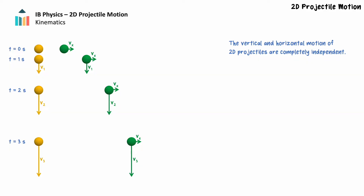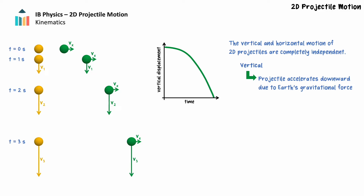Vertically, the projectile accelerates downward due to the Earth's gravitational force. If we examine a graph of vertical displacement as a function of time for this projectile, we see this downward acceleration, with the graph getting steeper over time. Horizontally, the projectile maintains a constant velocity provided there is no air resistance acting on it.